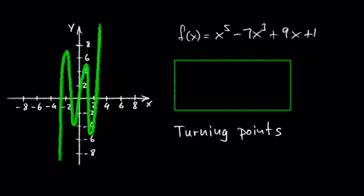When we look at this graph of the function f of x equals x to the fifth minus 7x cubed plus 9x plus 1, we see that the graph has four turning points.